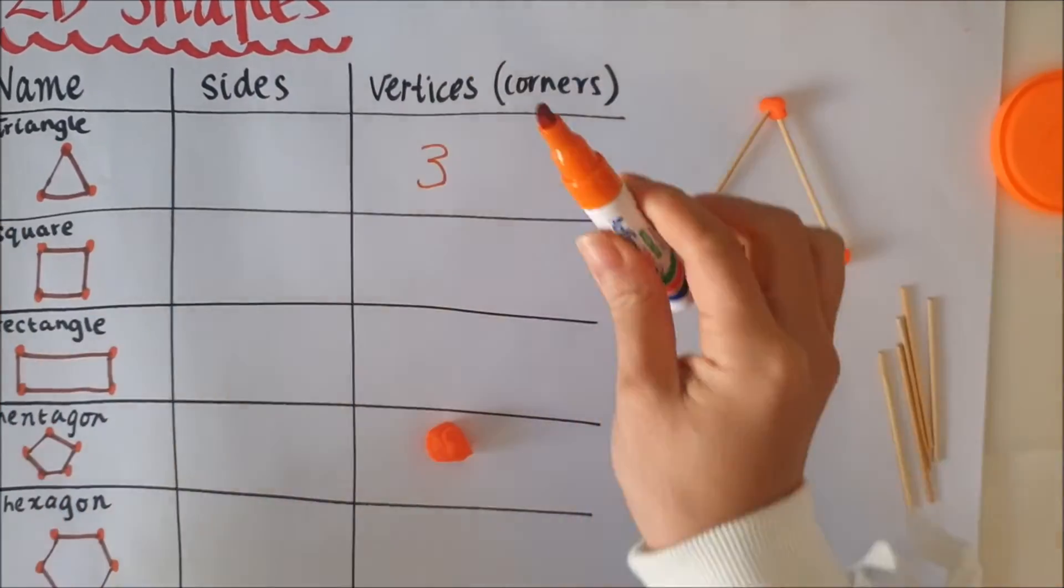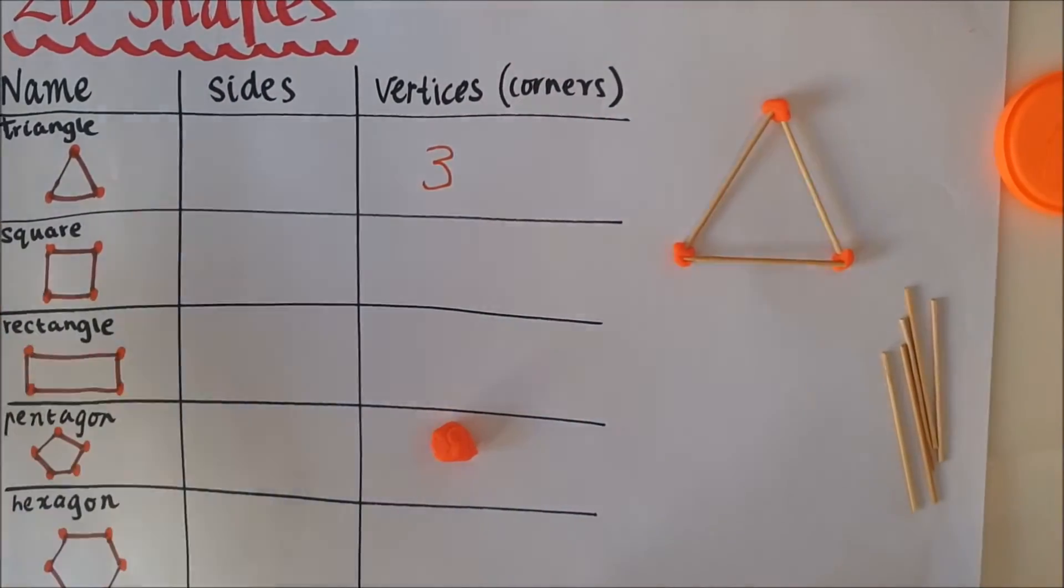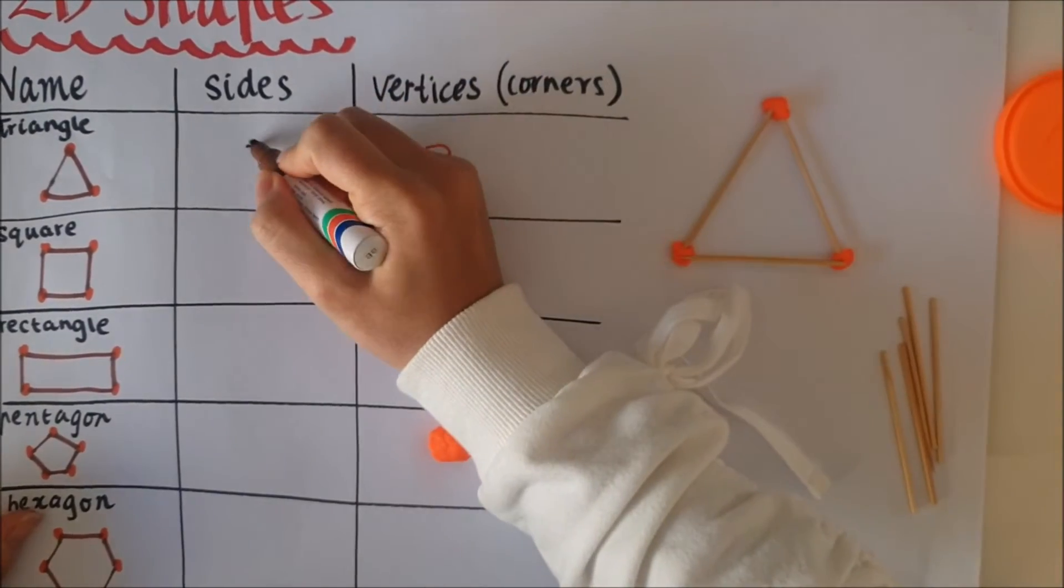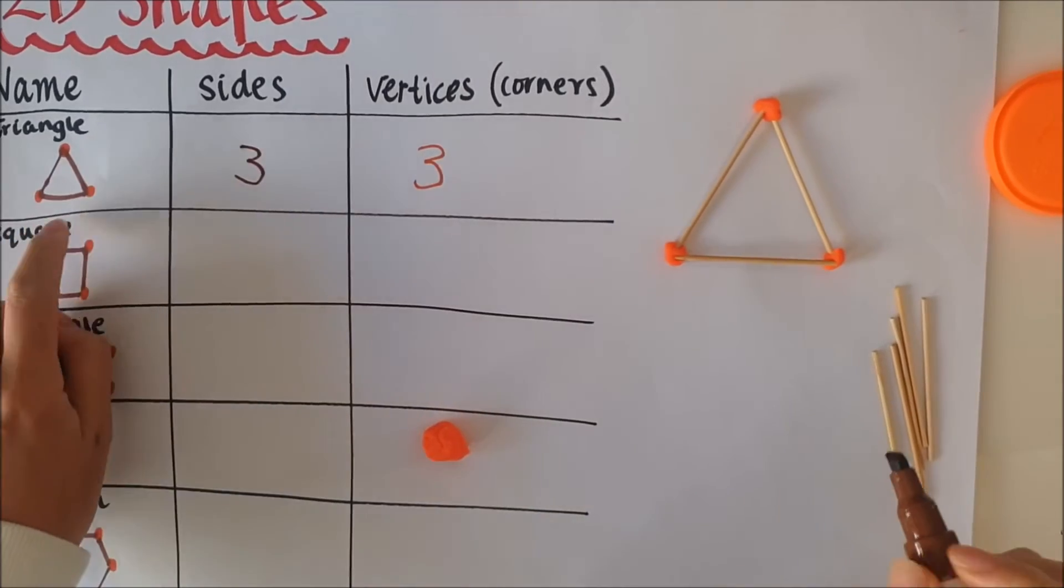One, two, three. Same as the picture I've drawn and the sides, the straight edges. One, two, three. So I've got three there. One, two, three.